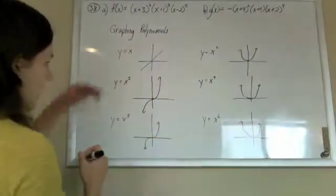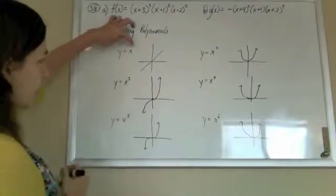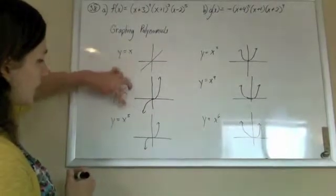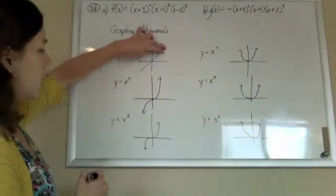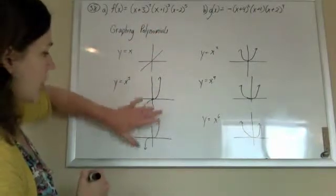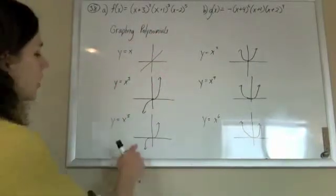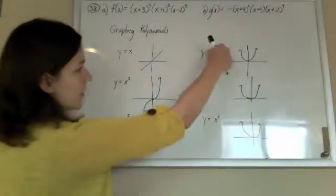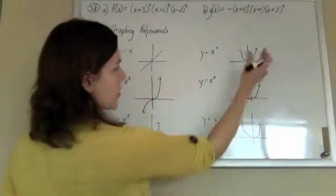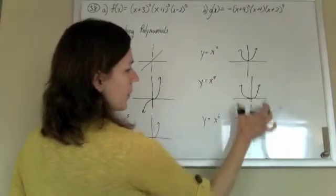So you notice that everything with an odd power, one, three, and five, right? One end goes down, the other end goes up. One end goes down, the other's up there. Their end behavior is opposite. Whereas all the evens, their end behavior is the same. Up and up, up and up, up and up.